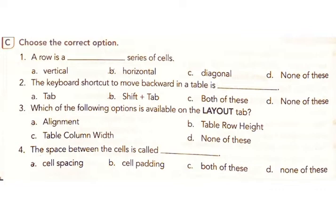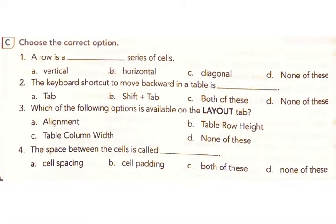Section C: Choose the correct option. 1. A row is a series of cells arranged: a) vertical, b) horizontal, c) diagonal, d) none of these. Answer: b) Horizontal. 2. The keyboard shortcut to move backward in a table is: a) Tab, b) Shift+Tab, c) both, d) none. Answer: b) Shift+Tab.